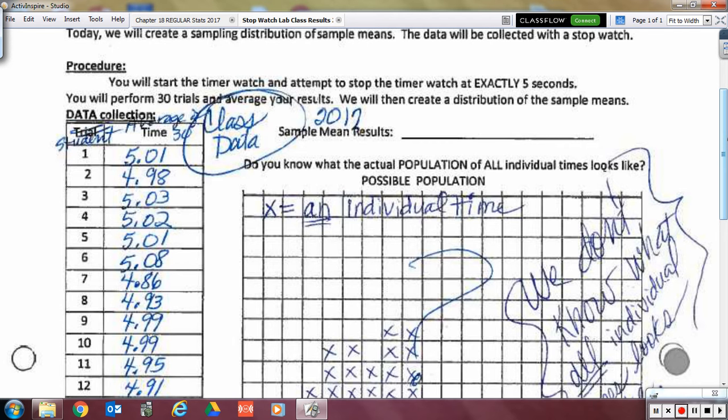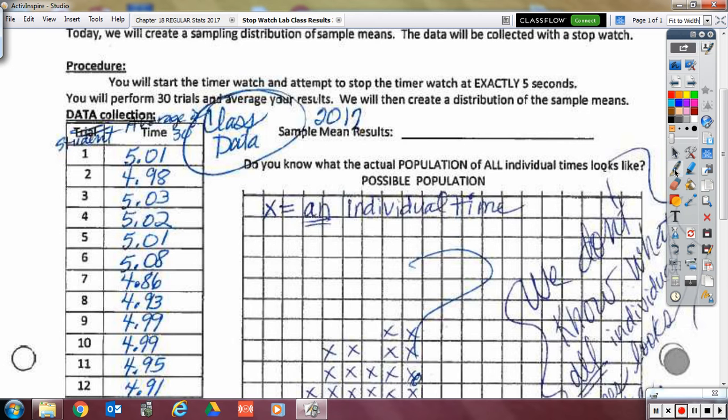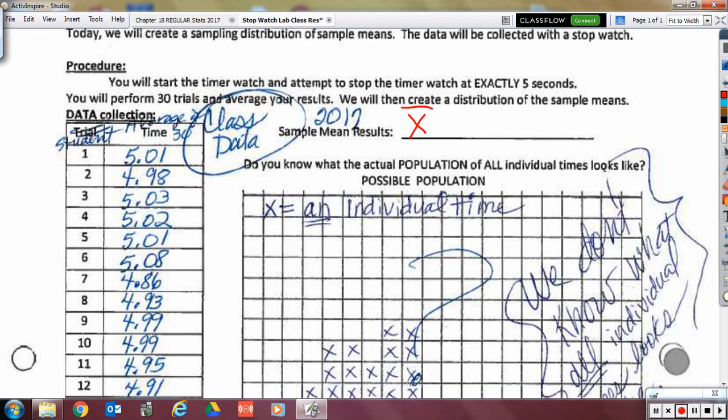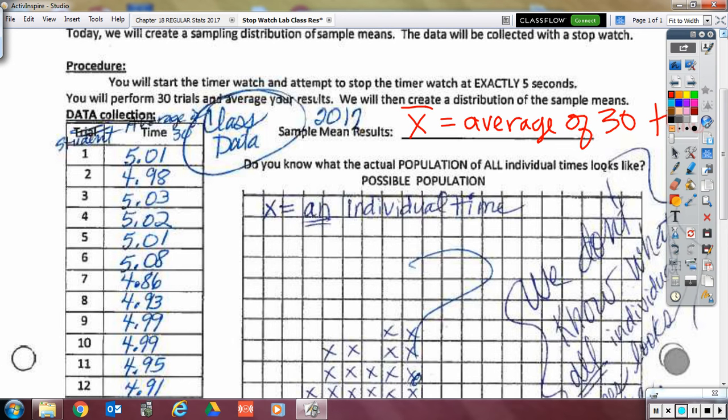So we know yesterday that every single one of you got your own X bar. And so what does your X bar represent? Good. So every single one of you got your own personal average of 30 trials. Okay? Average of 30 times.